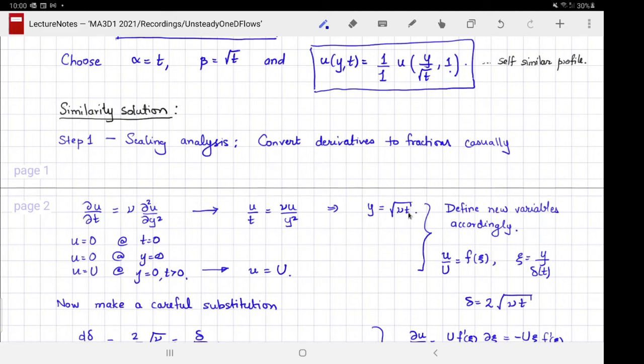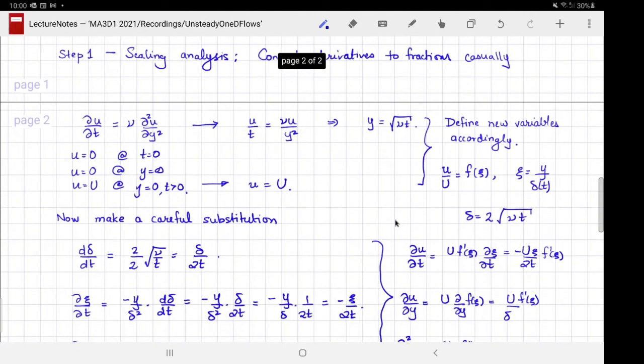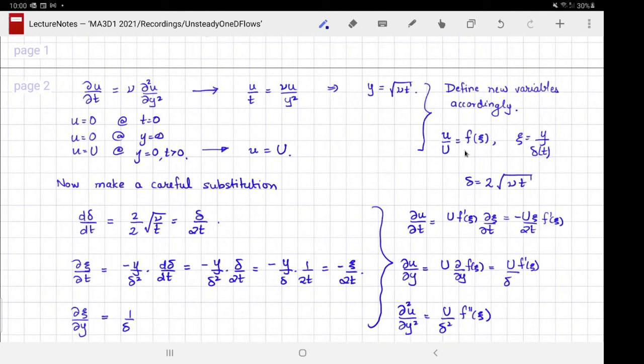Here, instead of having y/√t as our self-similar variable, we're going to take y/√(νt) as the self-similar variable, and we define new variables accordingly. u equals capital U means we must scale little u by capital U, so we define this ratio to be f of ξ, where ξ is a similarity coordinate y/δ, where I could have taken δ to be √(νt), but for future convenience I have δ as 2√(νt).